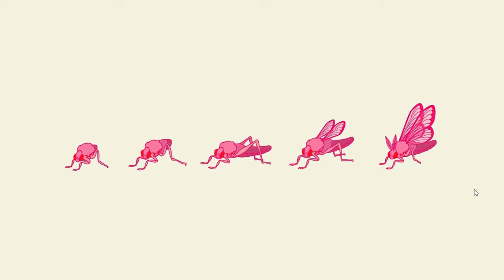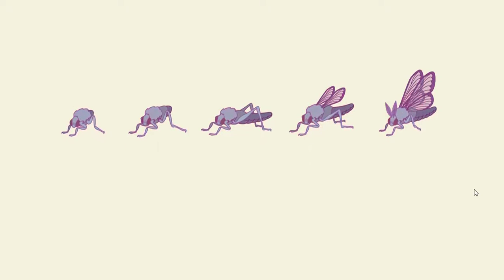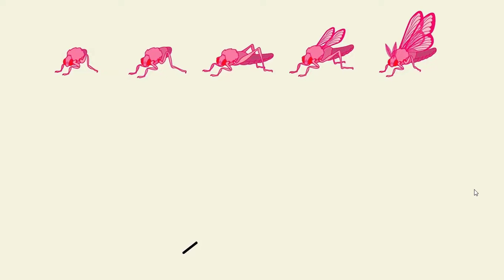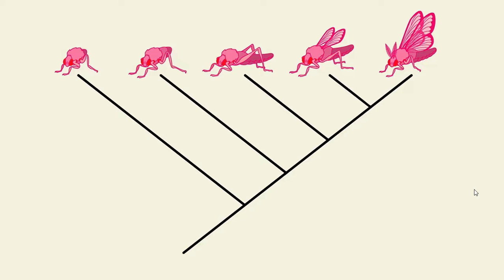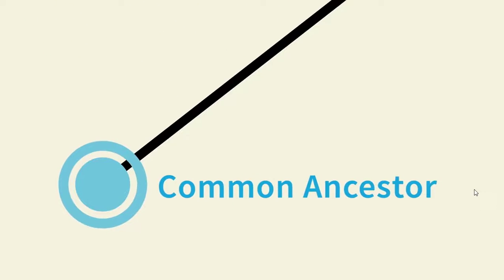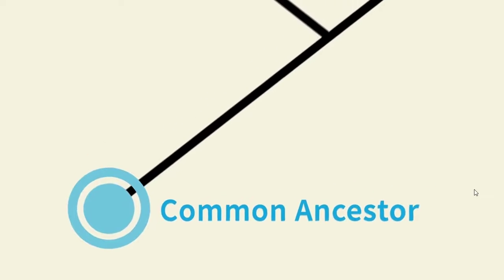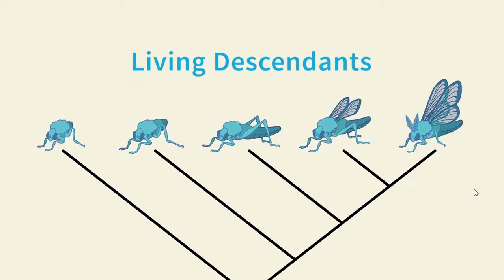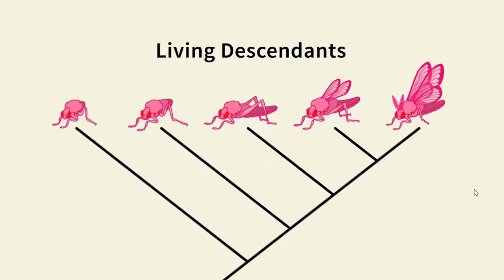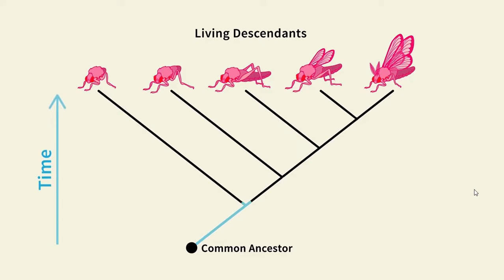One way to organize them is to arrange them in a line from simple to complex, and then connect them with lines or branches. The lower branches connect to the simpler creatures, and the higher branches to the more complex ones. This diagram is a best guess at how these creatures may be related. The base represents a hypothetical common ancestor, and the organisms at the tips represent living descendants. The branches represent reproductive lineages and how they split over time.